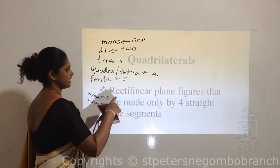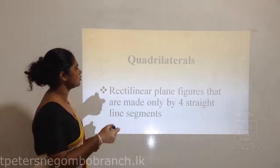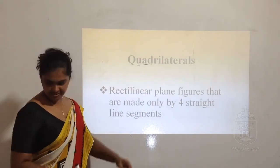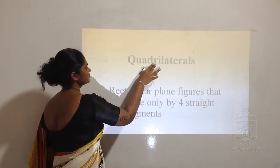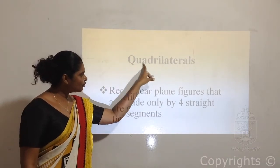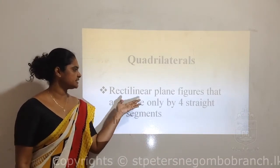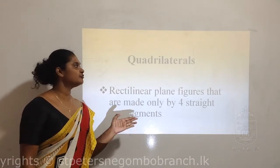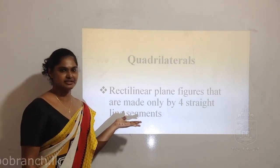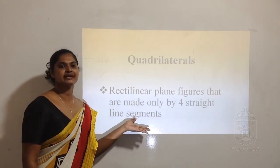So 'quadra' stands for four. The prefix 'quadra' combined with 'lateral' gives us 'quadrilaterals.' That means rectilinear plane figures made only with four sides. What are quadrilaterals? The rectilinear plane figures that are made only with four straight line segments. We can say quadrilaterals are closed plane figures which are made only with four straight line segments.